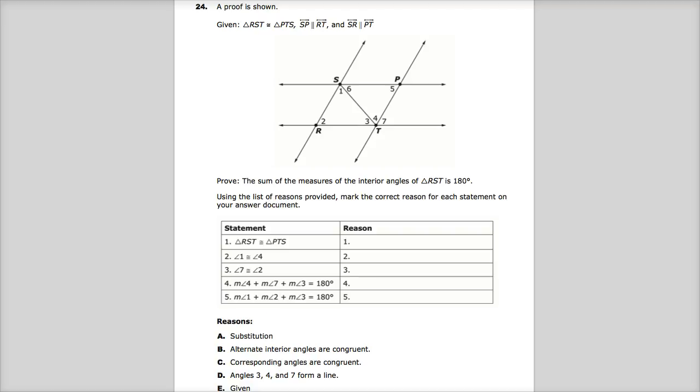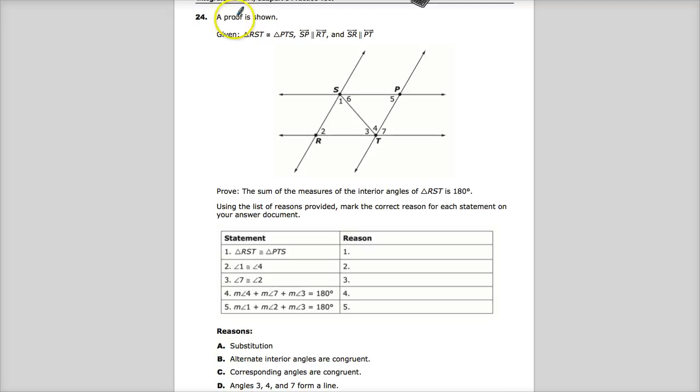This is a proof question, which means it's really long-looking. It says a proof is shown. There's stuff. Given that triangle RST is congruent to triangle PTS, and I may want to make some statement or some little drawing here to indicate where that is. I kind of wish that, in retrospect, that I'd gotten a smaller pen style. There we go.